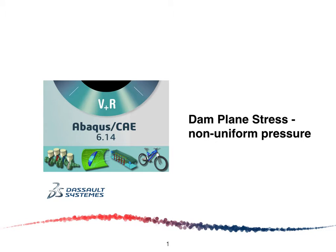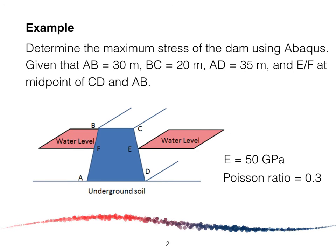This example is about non-uniform pressure and we are going to model it using plane stress. We are going to determine the maximum stress of the dam using ABAQUS. The dimensions of the dam are given. We may model ABCD as a full model or model it symmetrically about the vertical y-axis. The Young's modulus and Poisson ratio are given as well.